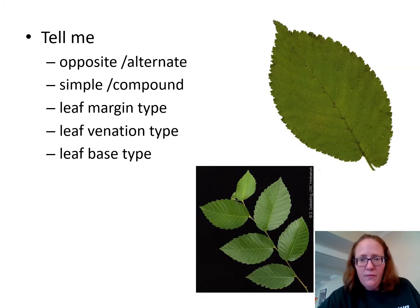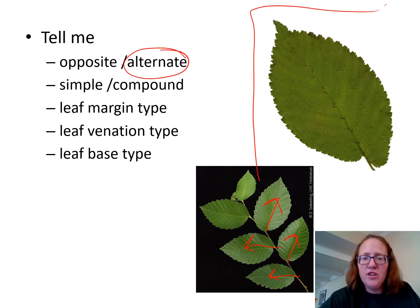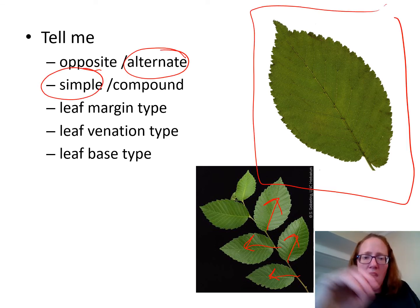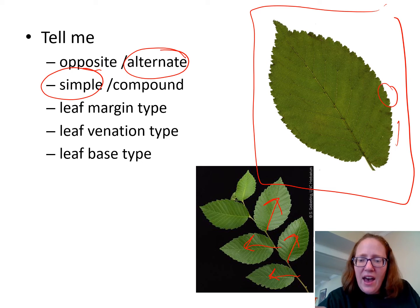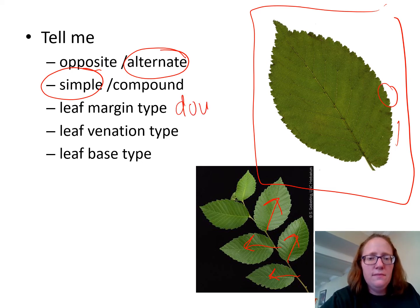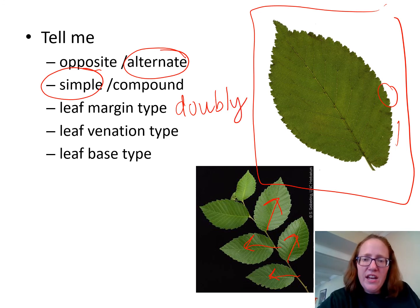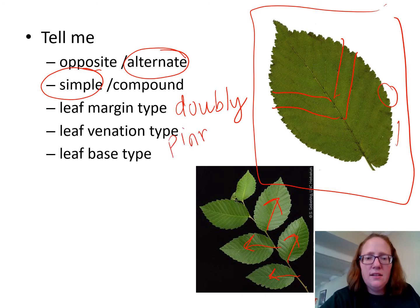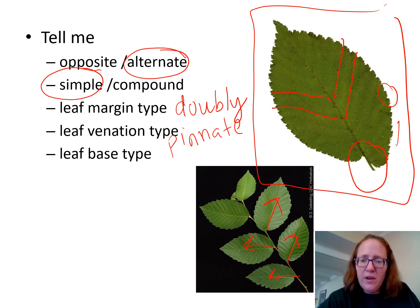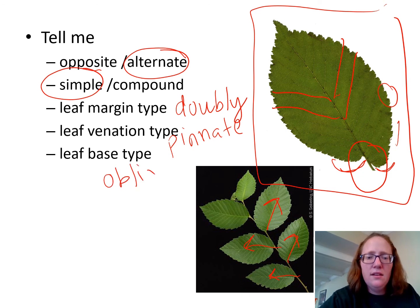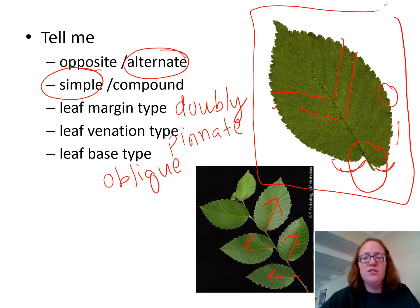Our last one is elm. In the picture, one goes to the left, one to the right, alternating — so that is alternate. This whole picture is one leaf, so we know it's simple. For the margin, it has teeth, but then those teeth have even tinier teeth — so this one is doubly toothed. The venation goes straight out to the side, not curving up to the top, so it's pinnate. And look at the bottom — one side attaches up here and the other is down here, so the base is oblique. That's elm.